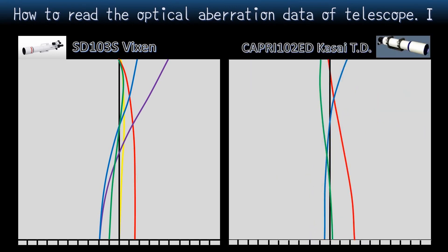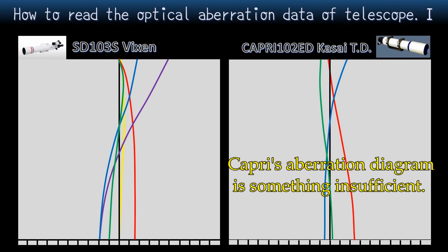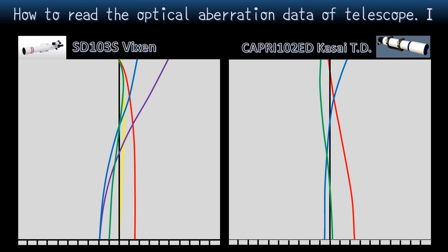Well, next is the fight with Capri. However, Capri's aberration diagram is something insufficient. We can only see three colors. Actually, from this graph, the most important color is missing. That is a purple line. In addition, the line that looks green is also different. By all right, it must be colored yellow. Immediately, we can understand why such cheating is being done.